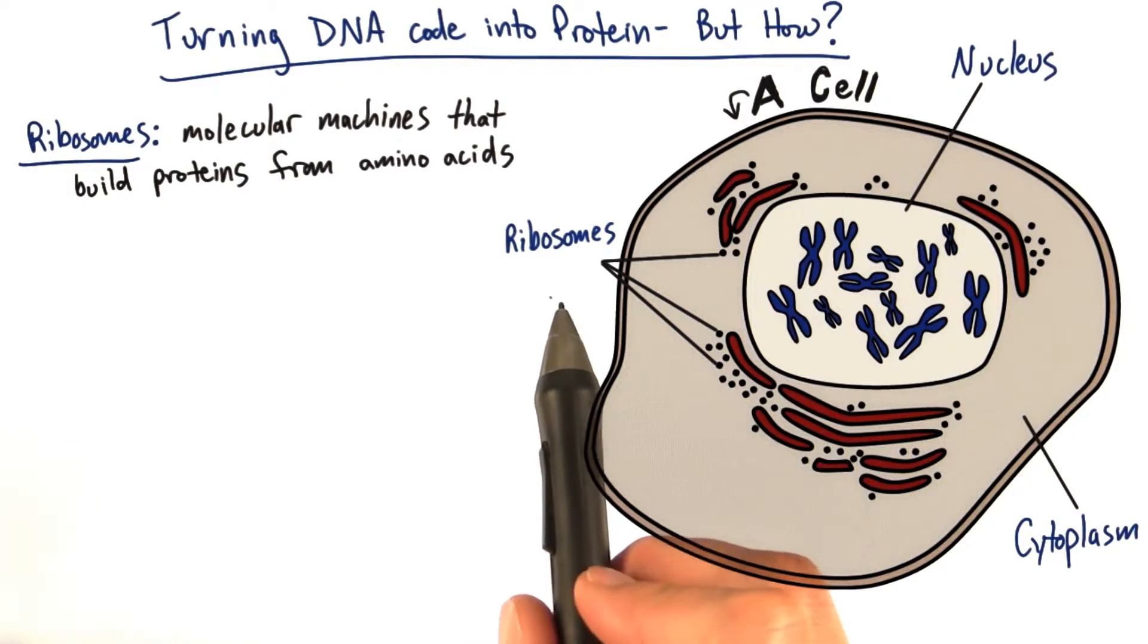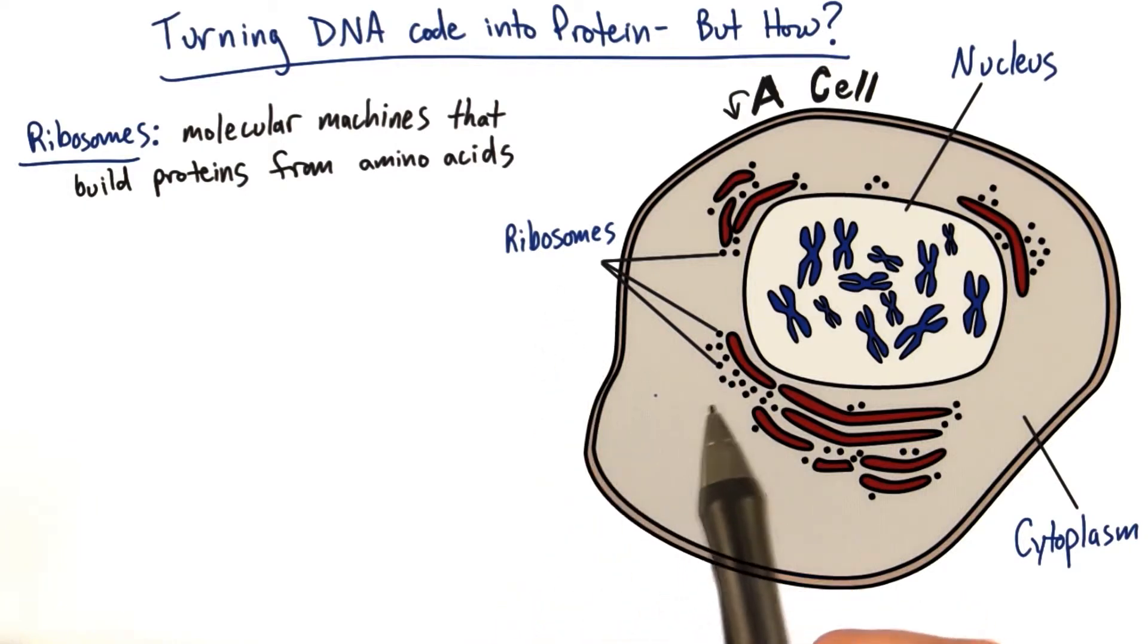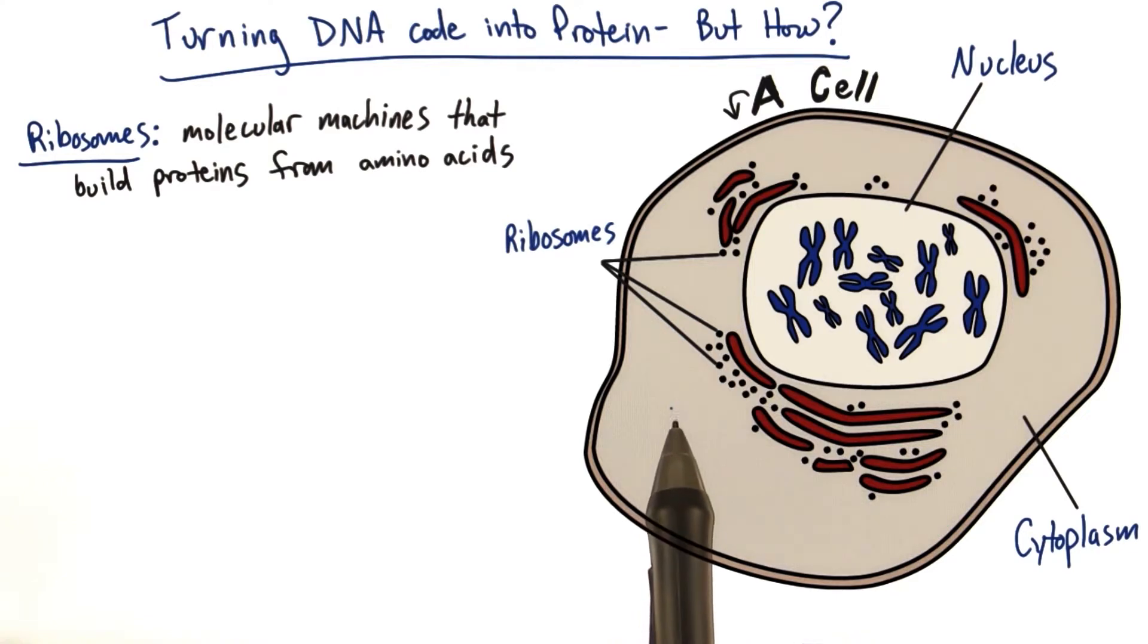So if ribosomes are the molecular machines that will build the proteins from amino acids, and they're located out here in the cytoplasm, and the information that we need to make the protein is actually here in the nucleus.